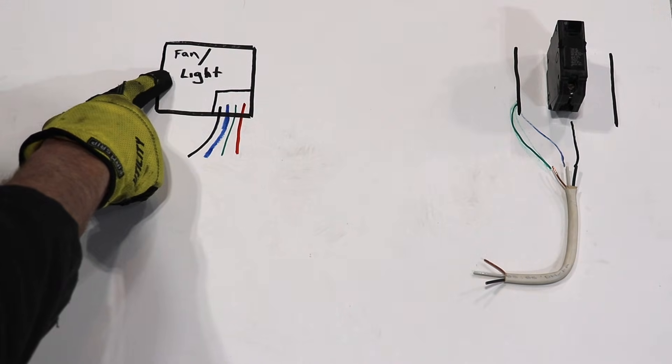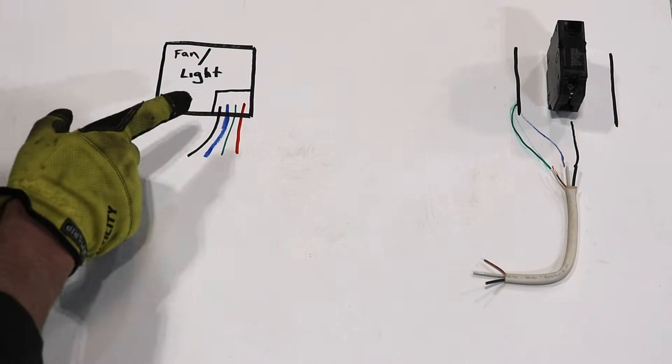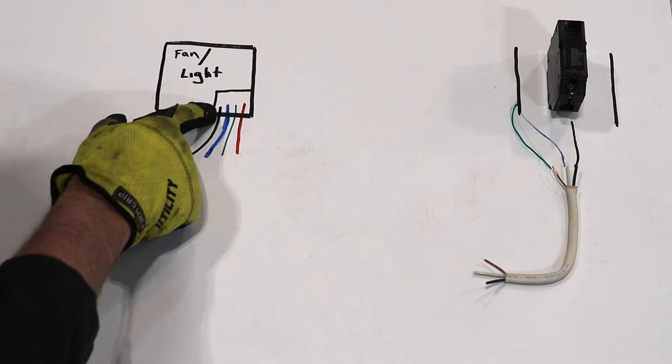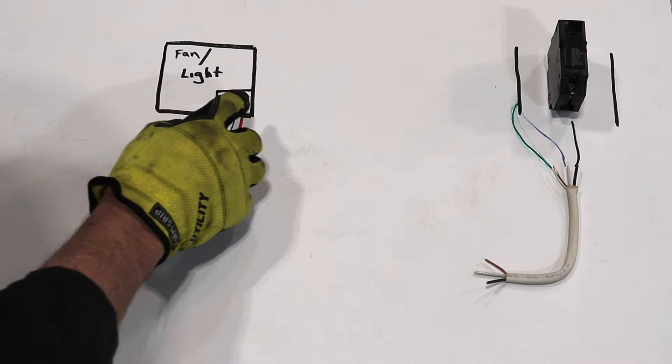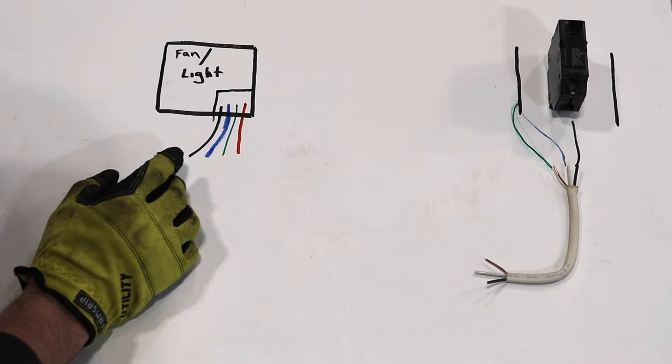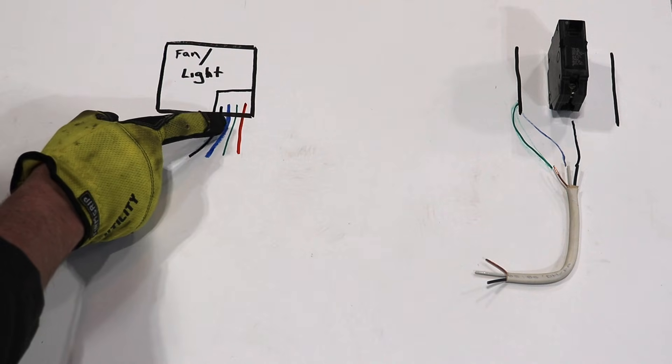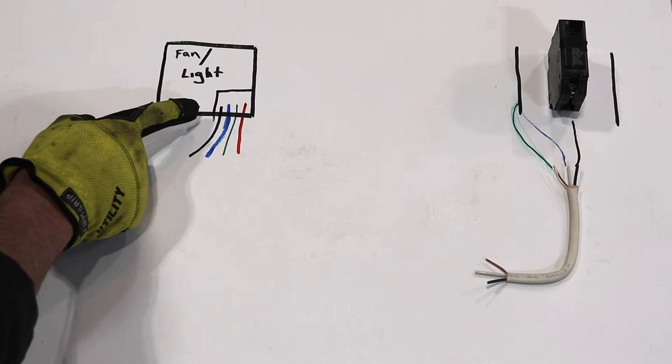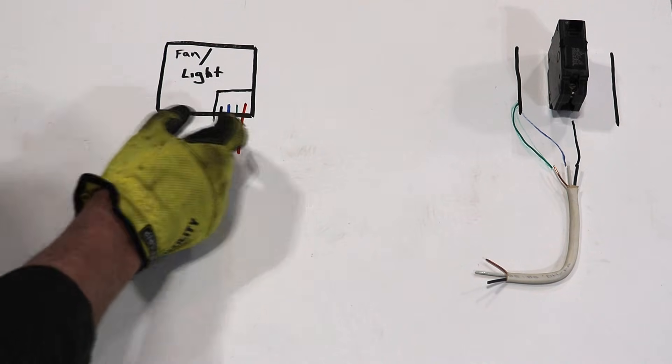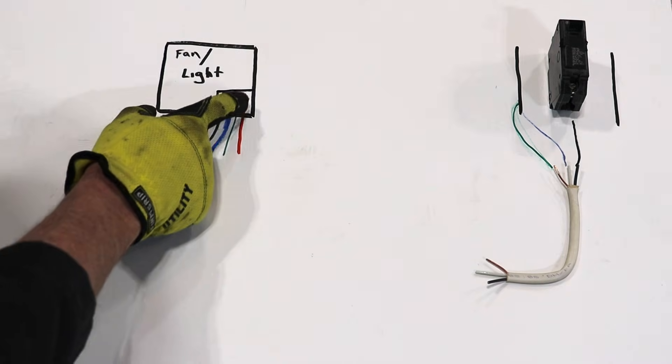Now let's hop over to our fan light combo. I don't care what model you buy it's always gonna have its own little junction box here and you're gonna have wires coming out of it. You have your ground and your neutral but then you have a black wire and then one other wire, usually red.